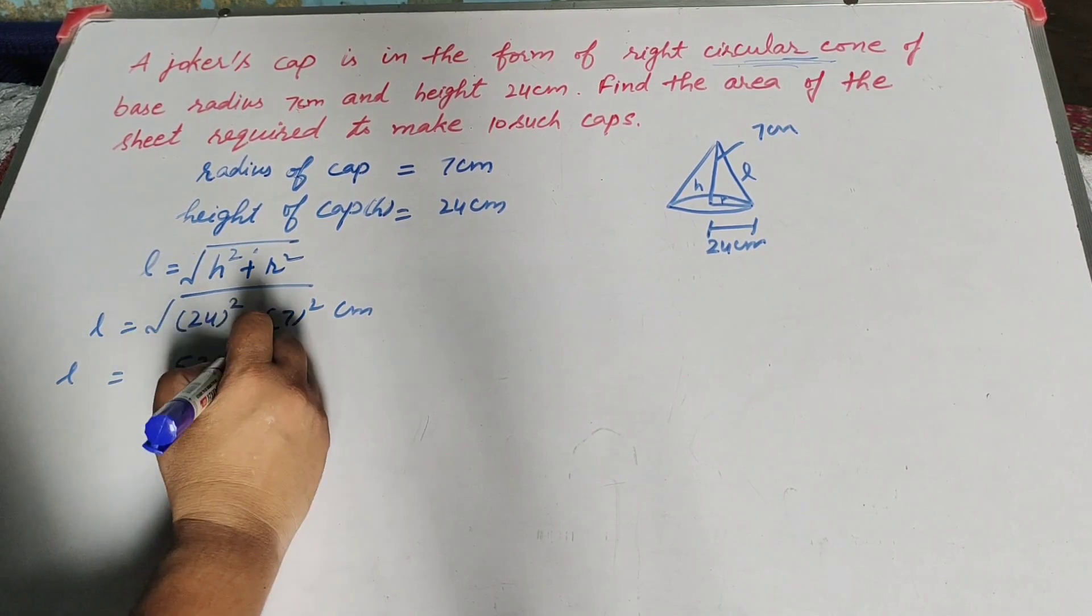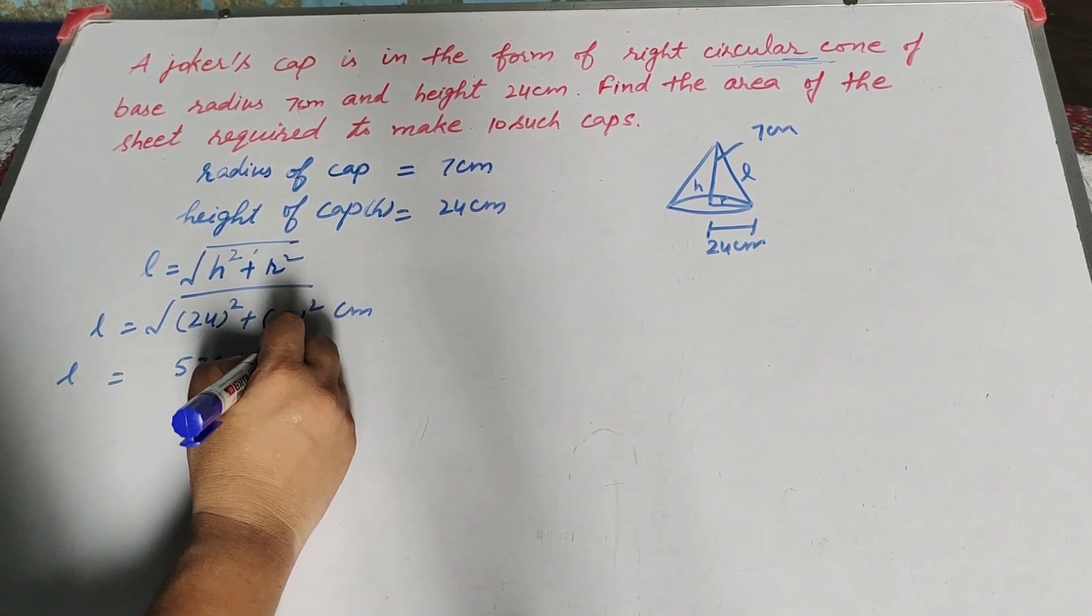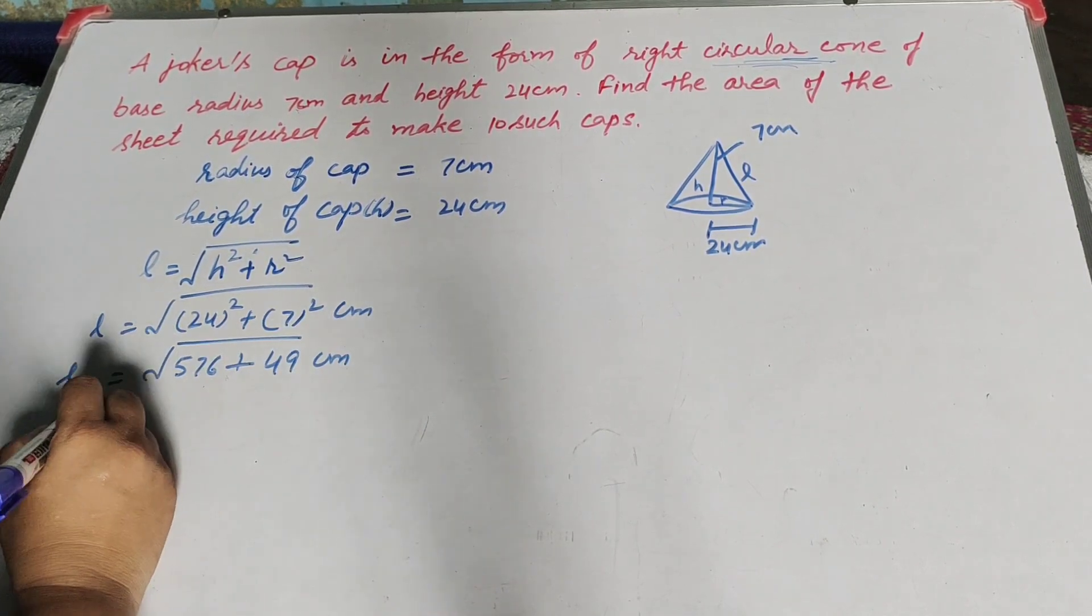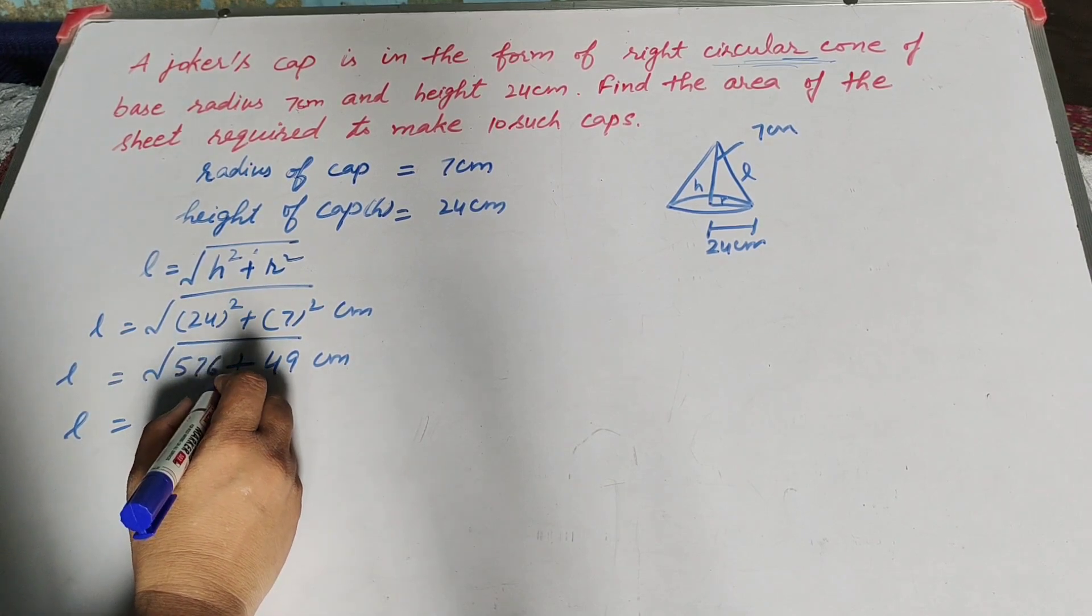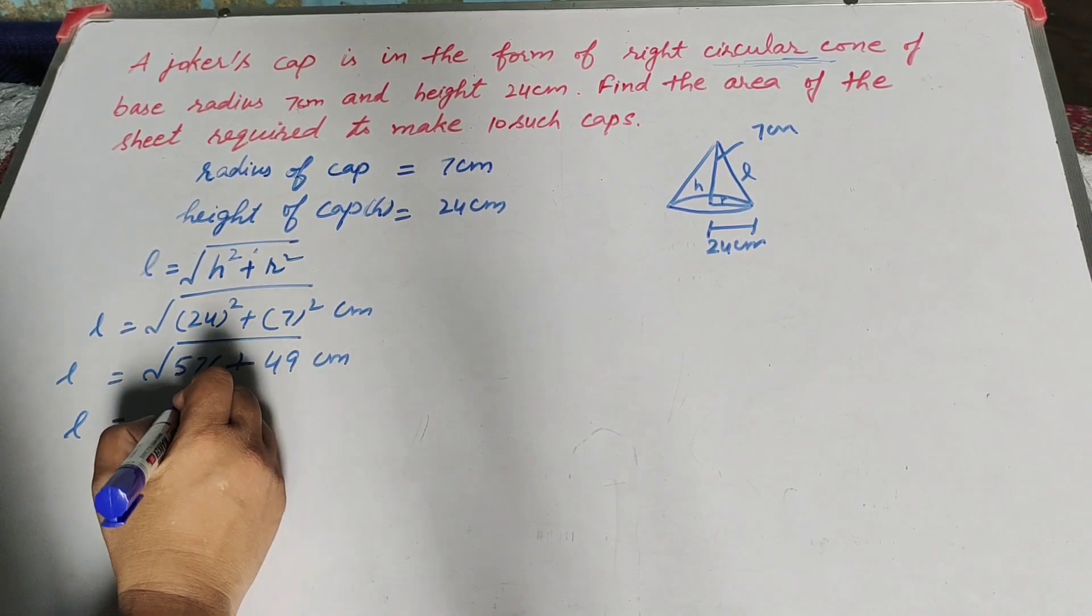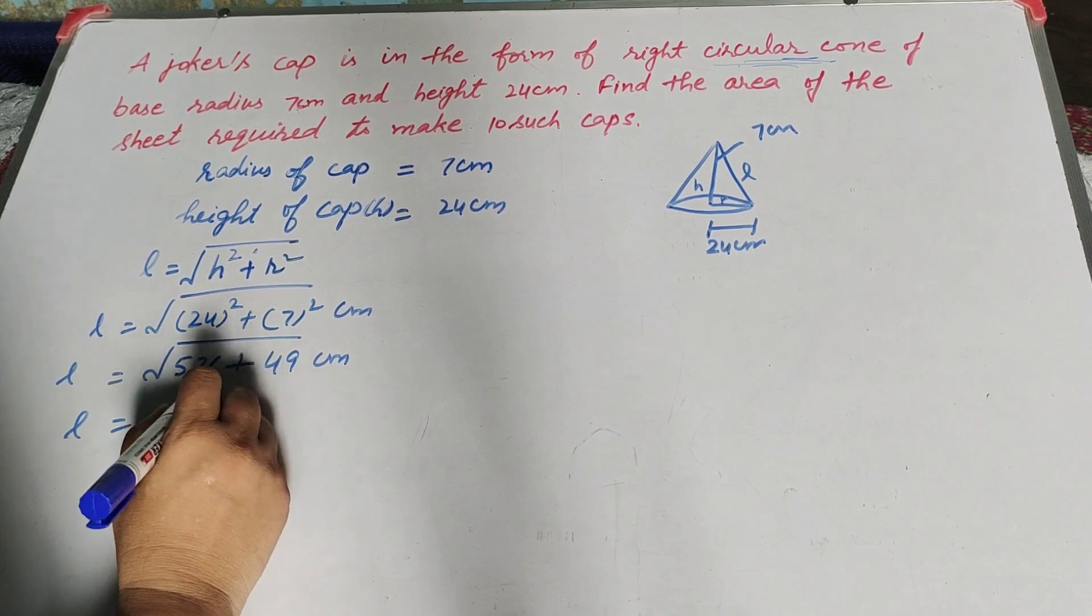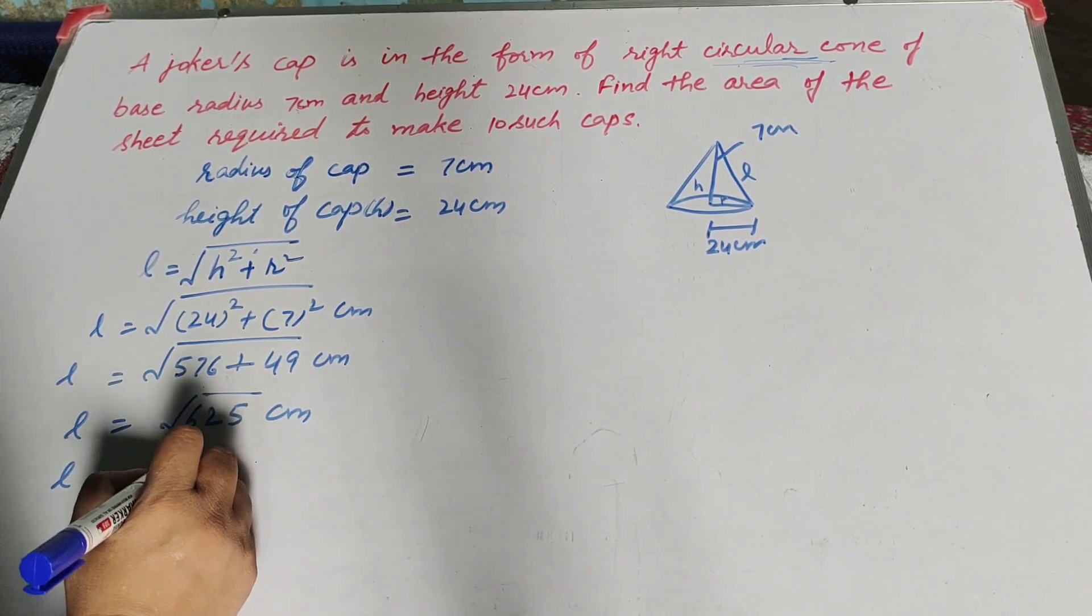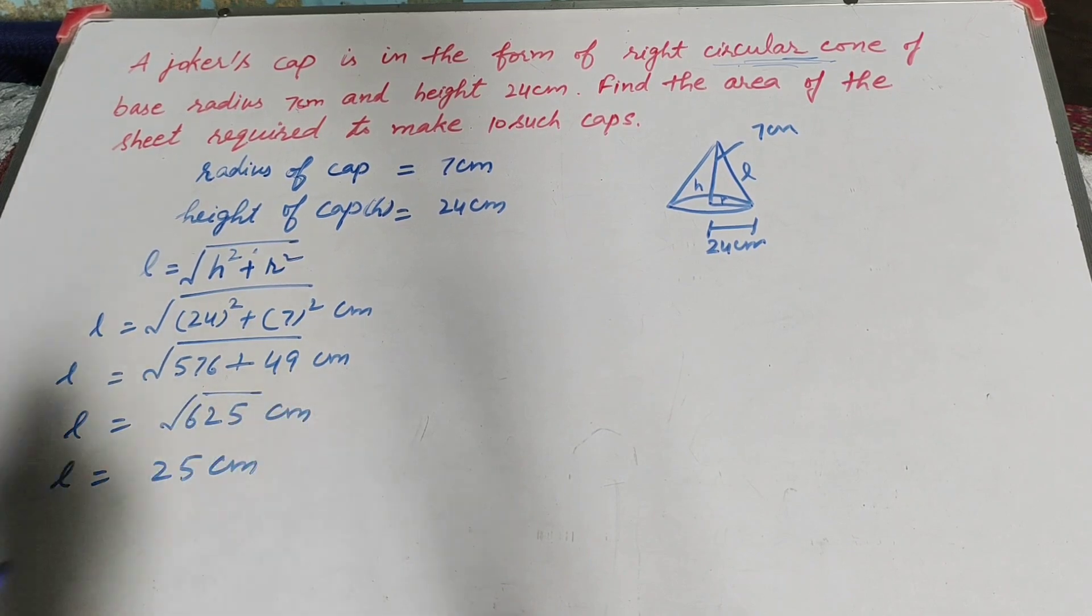So L is equal to 24 square, it is equal to 576 plus 7 square is 49. L is equal to 576 plus 49, it is equal to 625 centimeters. So L is equal to square root of 625.